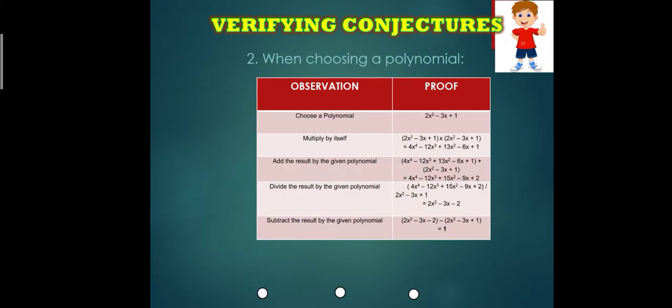How about choosing a polynomial? So here we chose 2X squared minus 3X plus 1. Multiply it by itself. So 2X squared minus 3X plus 1 times quantity 2X squared minus 3X plus 1.